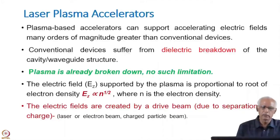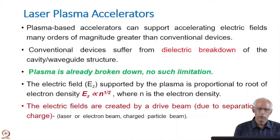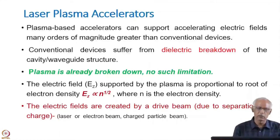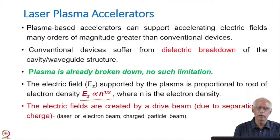In conventional accelerators using cavities or waveguides, when the field becomes very high, field ionization takes place, plasma is formed, and we cannot go to higher gradients. However, in laser plasma accelerators, the plasma is already broken down, so there is no such limitation on the accelerating gradient. The electric field in the accelerating direction supported by plasma is proportional to the square root of the electron density.